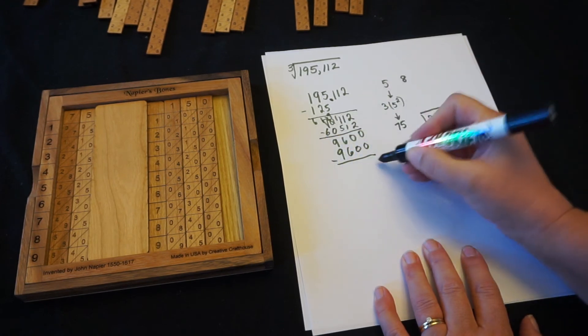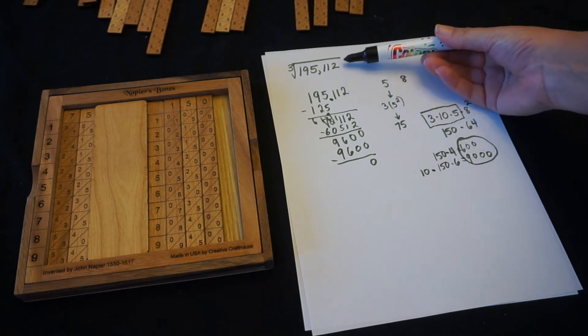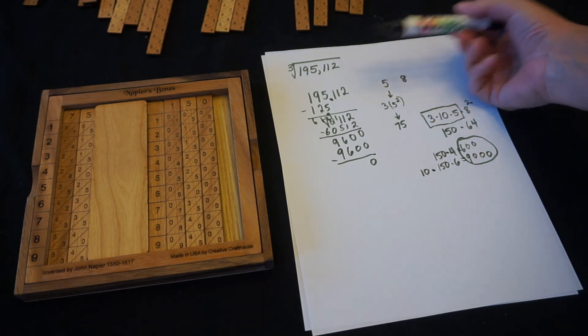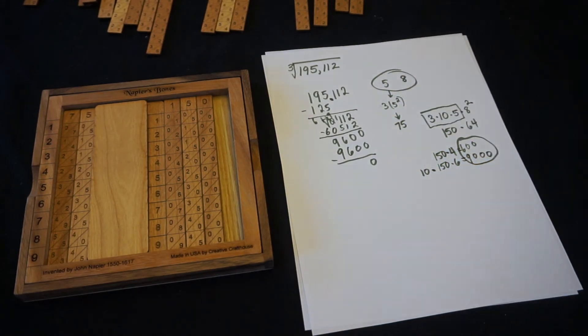That does go in evenly. And so this number was a perfect cube. I have found the cube root of it, and that cube root, our answer is 58.